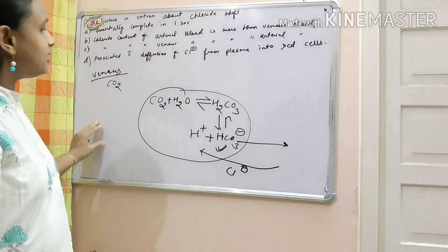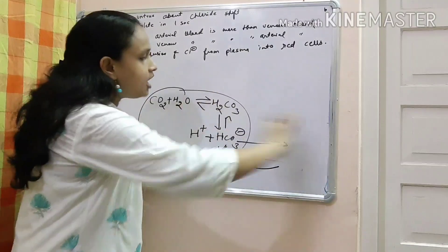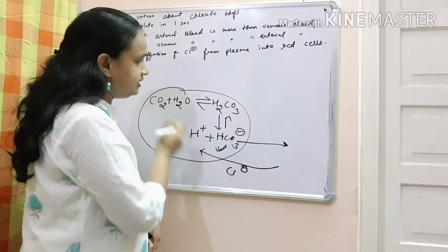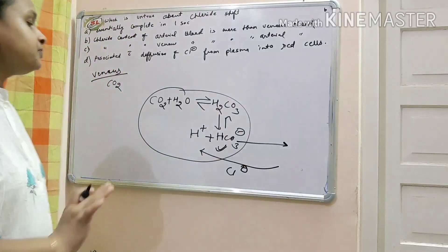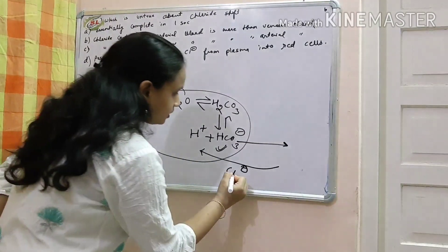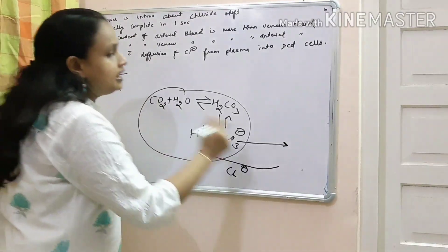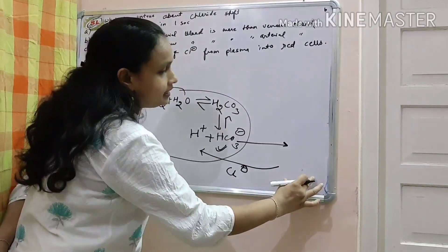So in venous blood, bicarbonate is going out of the cell and chloride is going into the cell. So, there is lot of chloride inside the RBC and there is less chloride in the plasma.